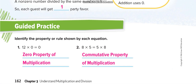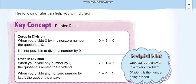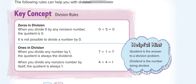Now let's move to the two division rules. The first is zeros in division, which states that 0 divided by any number is equal to 0. Whether you divide 0 by 5, 10, 100, or 1 million, the result is always 0 — as long as 0 is the number being divided.